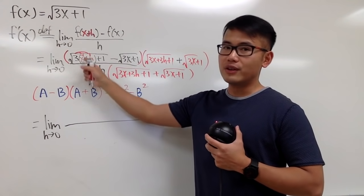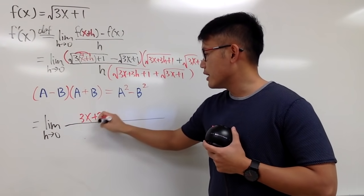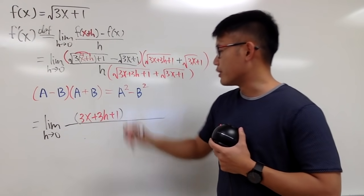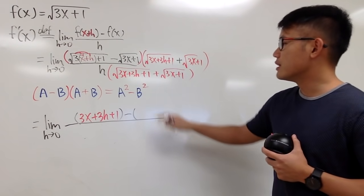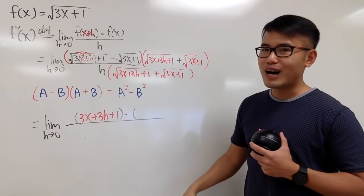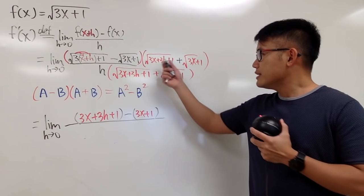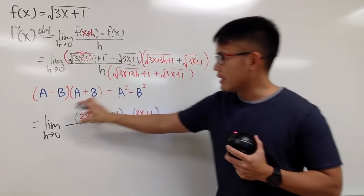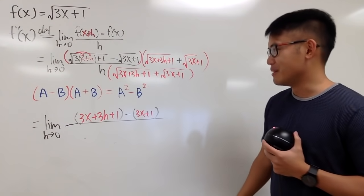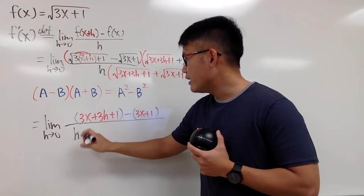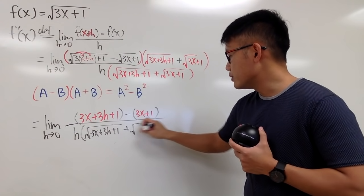In other words, you have the inside: 3x plus 3h plus 1, with no more square root — that's the a-squared part. Then minus b squared, which is the second square root squared: square and square root cancel out, giving just 3x plus 1. On the bottom, we're not going to multiply out the conjugate. So it stays as h times the quantity: square root of 3x plus 3h plus 1 plus square root of 3x plus 1.